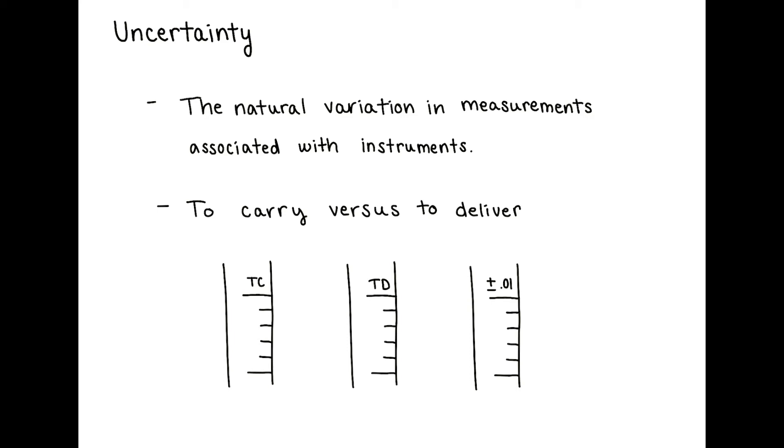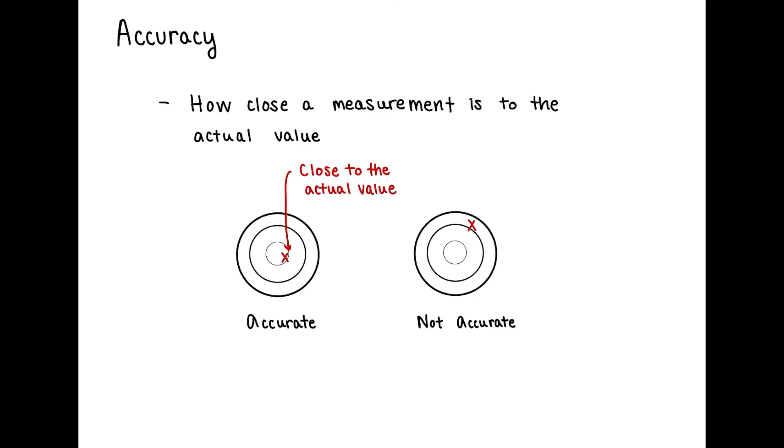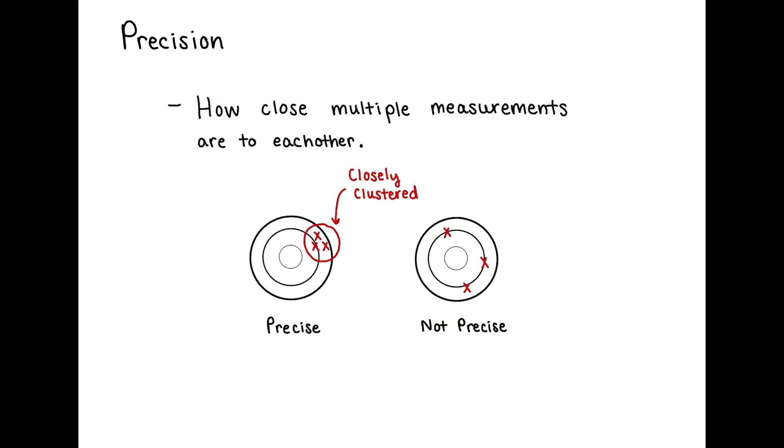Accuracy is how close your measurement is to the actual value. As you can see by my drawings of bullseyes here, the first X is very close to the center, which is the actual value, versus the second bullseye is not accurate because the X is not close to the center.